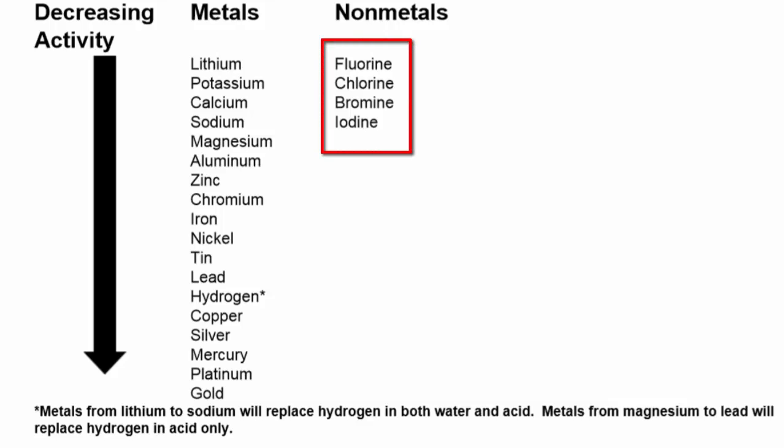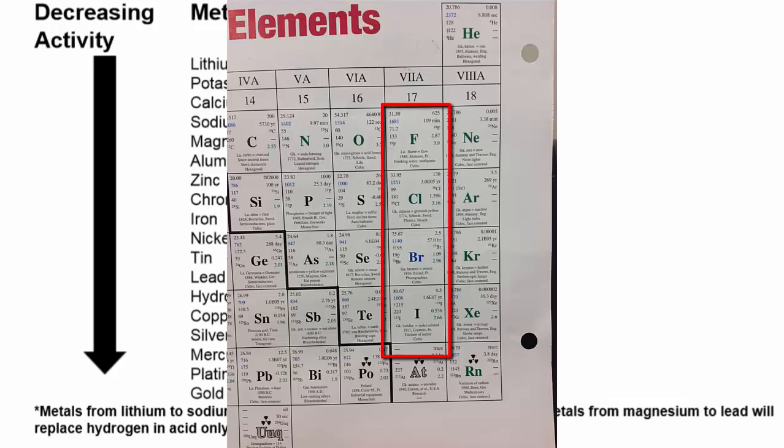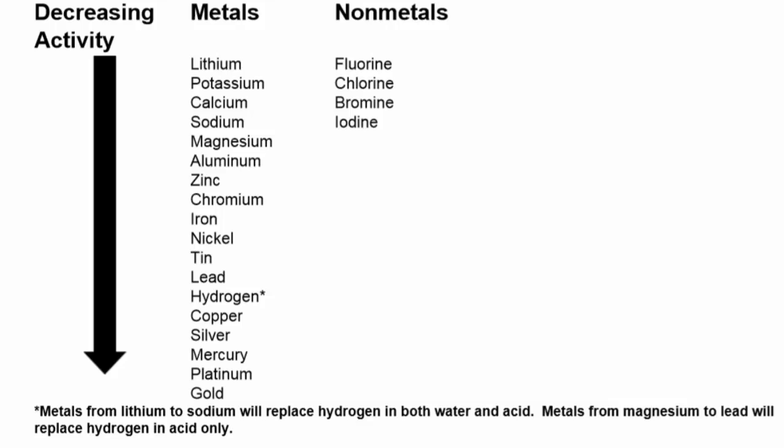In the final column on the right, we have the halogens: fluorine, chlorine, bromine, and iodine. You'll notice they're listed in decreasing activity, which is also the same order they appear on the periodic table. Fluorine above chlorine above bromine above iodine. That's an easy way to remember the halogens. Halogens will replace other halogens but won't replace metals because they're not similar to metals.